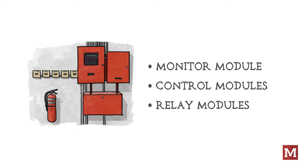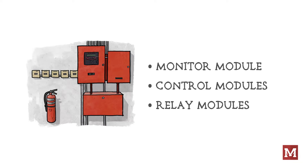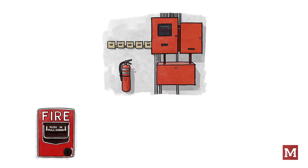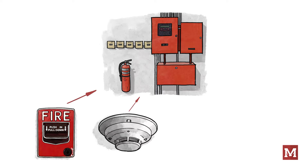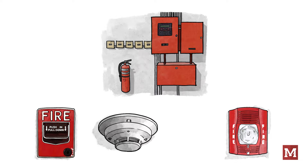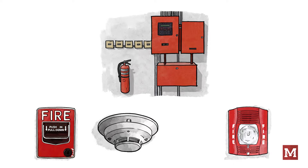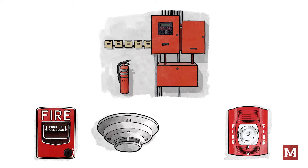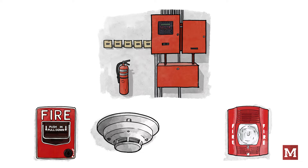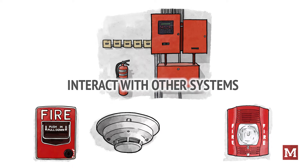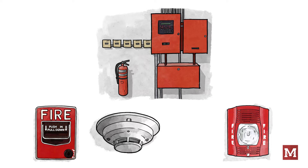Monitor, control, and relay modules allow us to do things in the fire alarm world. Up until now we essentially have had the input side of the system — which we term the initiation devices — and the output side of the system, which is the notification appliances. The inputs like pull stations and detectors are just waiting for a change to happen to alert the panel. The notification appliances like strobes and horns are waiting for the panel to go into alarm to alert occupants. Our fire alarm systems are limited in what they can do and what they can monitor until we introduce these modules.